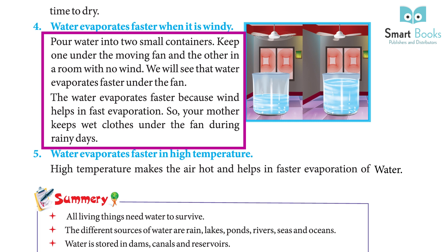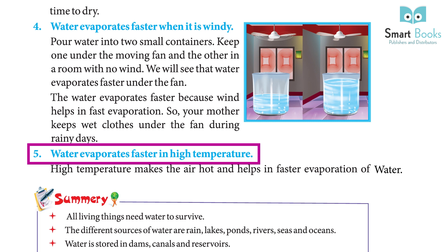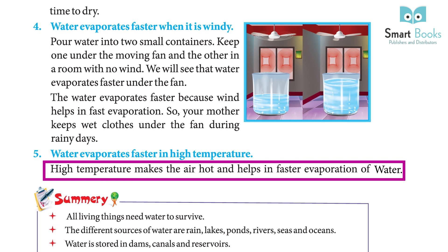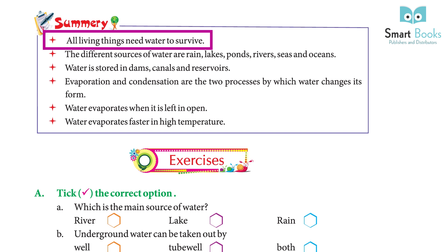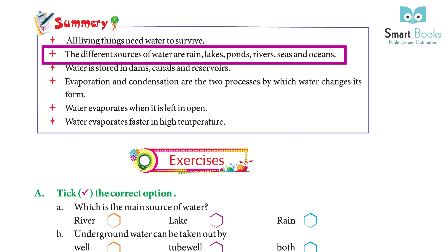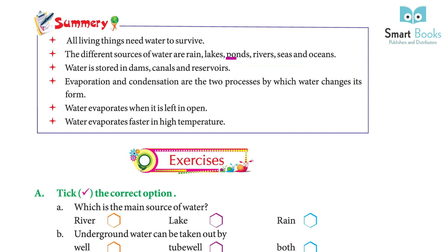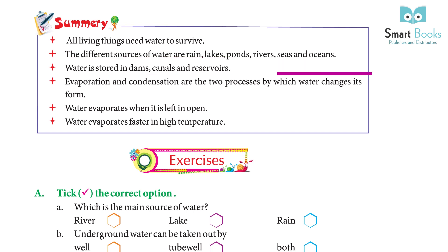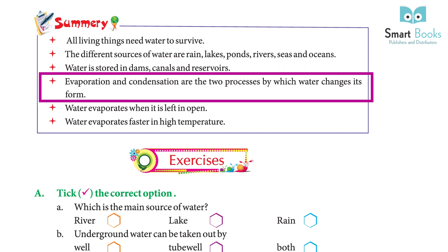Water evaporates faster in high temperature, as high temperature makes the air hot and helps in faster evaporation. Summary: All living things need water to survive. The different sources of water are rain, lakes, ponds, rivers, seas, and oceans. Water is stored in dams, canals, and reservoirs. Evaporation and condensation are the two processes by which water changes its form.